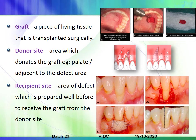Now, coming to the definitions of graft, donor site, and recipient site. These three definitions help us understand the surgical procedures better. The surgical procedures will be discussed in detail in the next class; here we will just cover the names of the different surgical procedures.